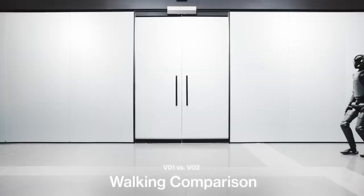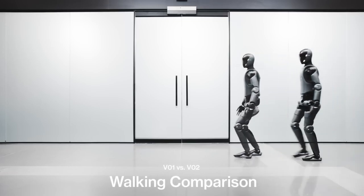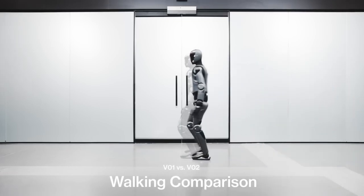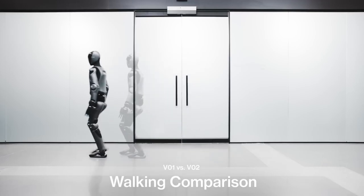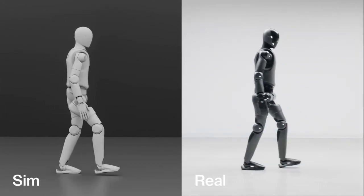They're training robots the way we train AI, by showing them the world and letting them learn from it. This is what allows a single neural network to replace dozens of custom systems. You feed it data, let it find patterns, and it gets better with every experience.